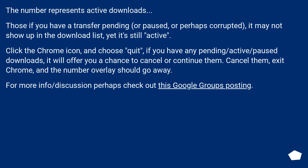The number represents active downloads. If you have a transfer pending, paused, or perhaps corrupted, it may not show up in the download list yet it's still active. Click the Chrome icon and choose Quick — if you have any pending, active, or paused downloads, it will offer you a chance to cancel or continue them. Cancel them, exit Chrome, and the number overlay should go away.